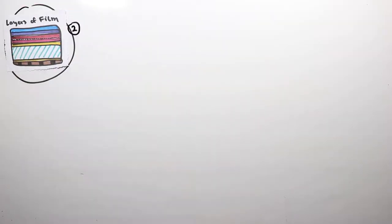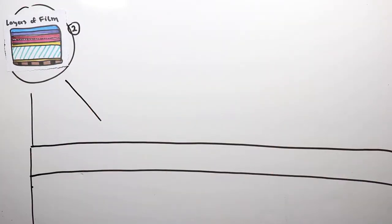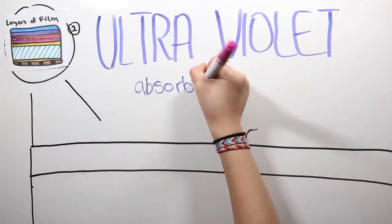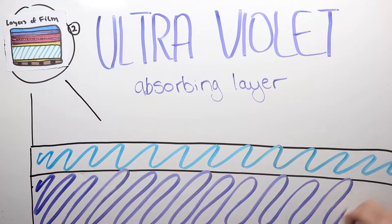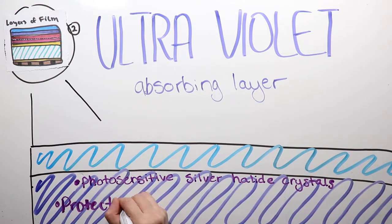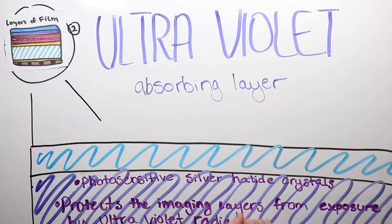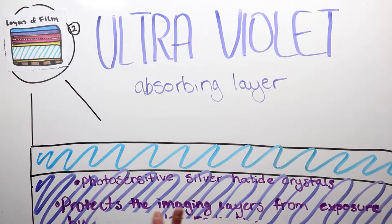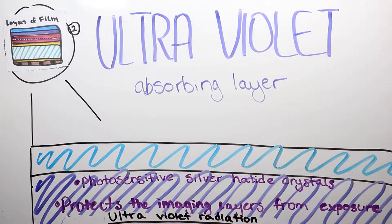After the supercoat layer, we have the ultraviolet absorbing layer. Although we can't see ultraviolet radiation, photosensitive silver halide crystals can be exposed by it. An ultraviolet absorbing layer is included to protect the imaging layers from exposure by UV radiation.